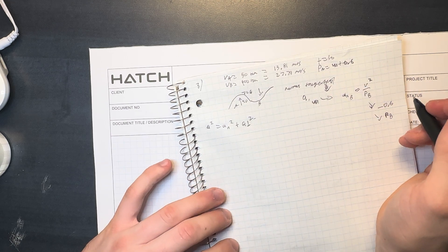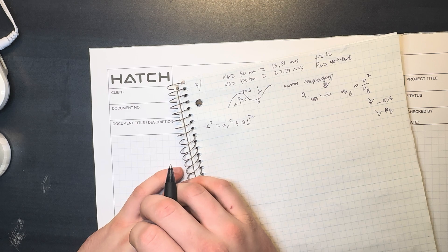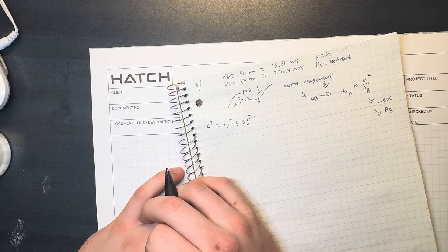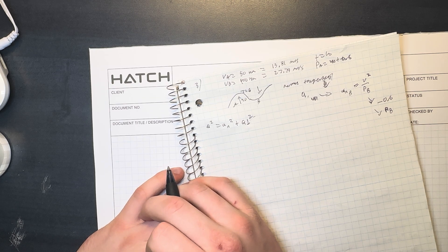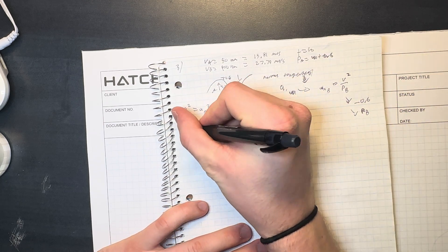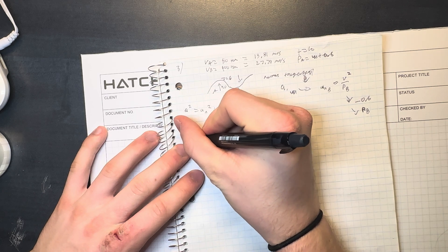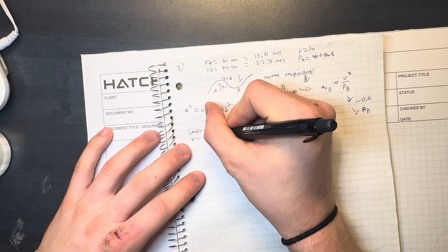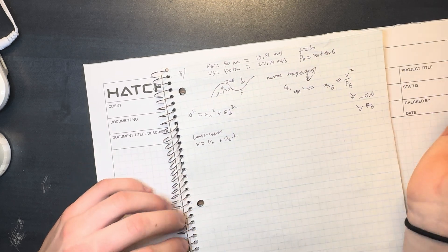Okay, so our first step is going to be to use, because acceleration is constant as it increases uniformly the velocity, we can assume constant acceleration. So we can use the formula v equals v_0 plus constant acceleration times time.